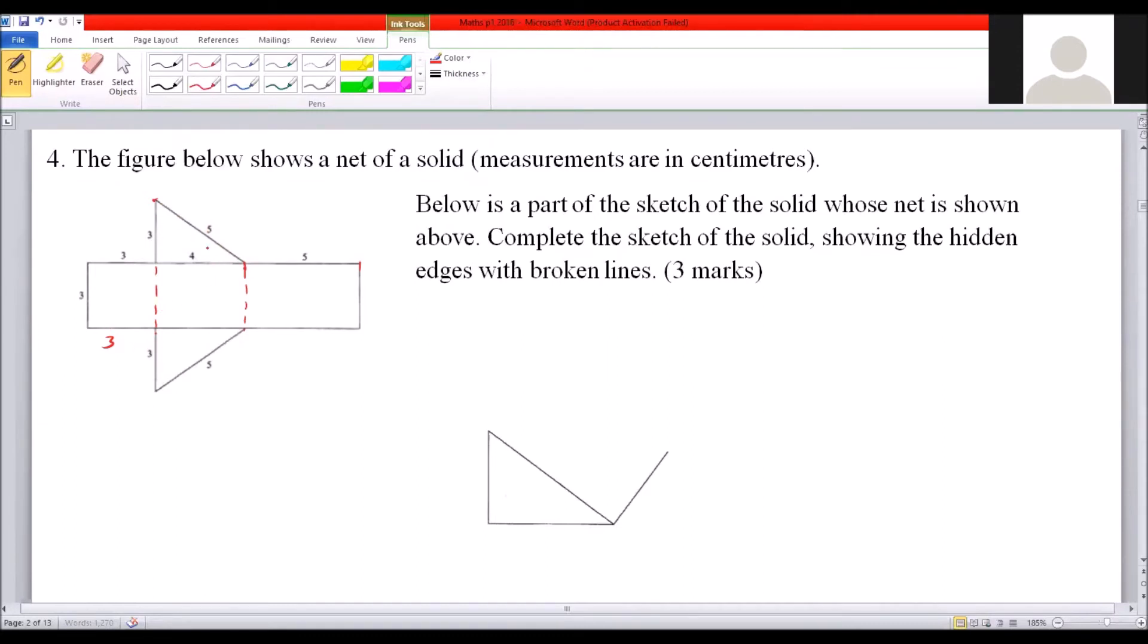So using a ruler - I just use my hand - you complete like that. So this is our side here which is five centimeters, this is five, and then this is the one that is three.